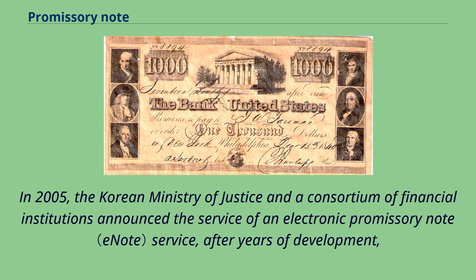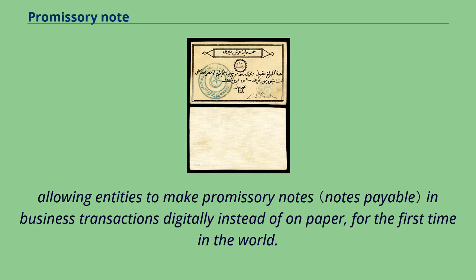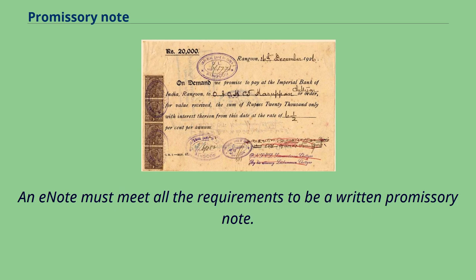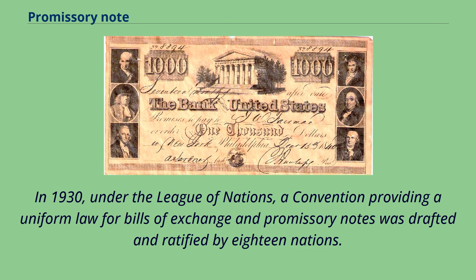In 2005, the Korean Ministry of Justice and a consortium of financial institutions announced an electronic promissory note service after years of development, allowing entities to make promissory notes in business transactions digitally instead of on paper — for the first time in the world. In the United States, e-notes were made possible as a result of the Electronic Signatures in Global and National Commerce Act in 2000 and the Uniform Electronic Transactions Act. An e-note must meet all the requirements to be a written promissory note. In 1930, under the League of Nations, a convention providing a uniform law for bills of exchange and promissory notes was drafted and ratified by 18 nations.